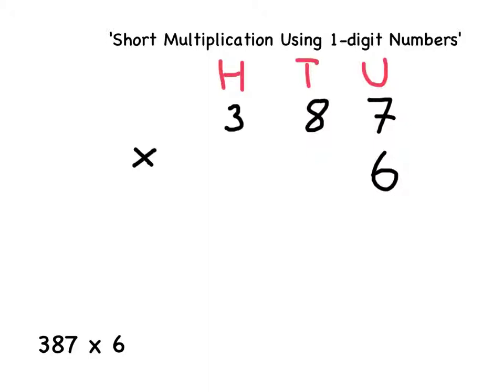I'm going to leave a gap and then use a ruler to draw a horizontal line to separate this part of my short multiplication from my answer. The reason for leaving this gap will become clear in the next step.